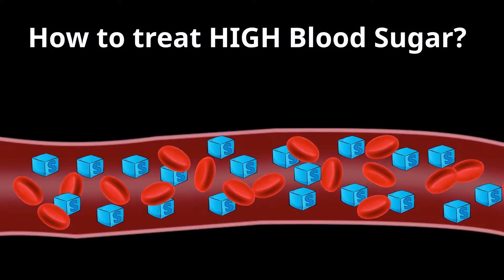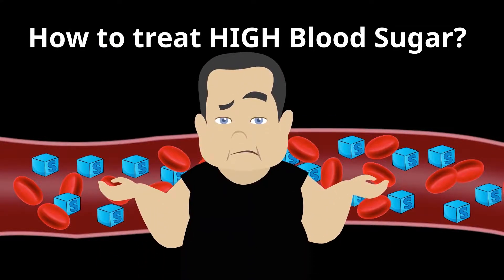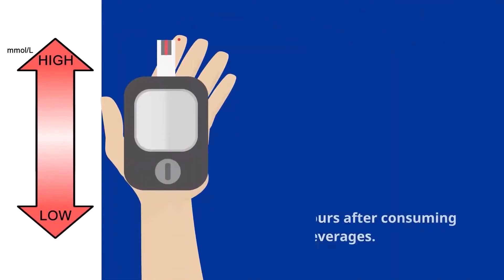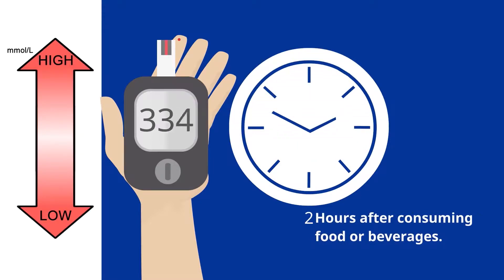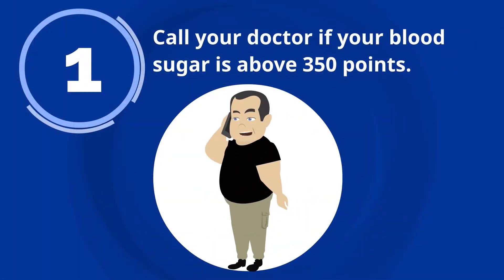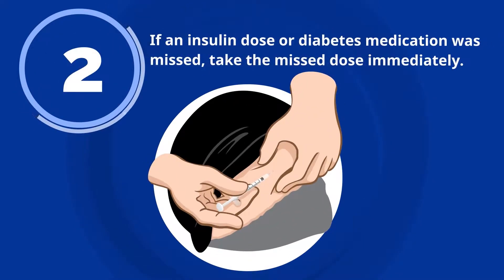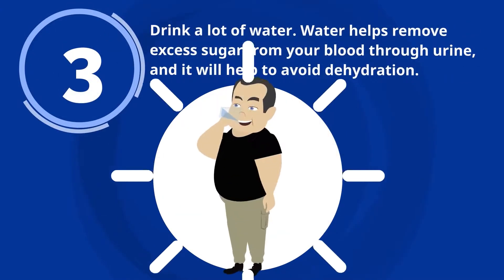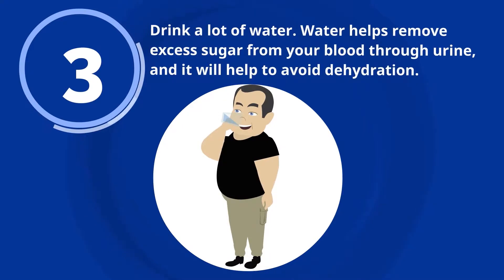How to treat high blood sugar. Now that you know the symptoms, causes, and effects of high blood sugar, let's learn about how to treat it and when to seek medical attention. Blood sugar is considered high when it is above 250 points, 2 hours after consuming food or beverages. When blood sugar is high, you will want to do the following: 1. Call your doctor if your blood sugar is above 350 points. 2. If an insulin dose or diabetes medication was missed, take the missed dose immediately. 3. Drink a lot of water — water helps remove excess sugar from your blood through urine and helps avoid dehydration.